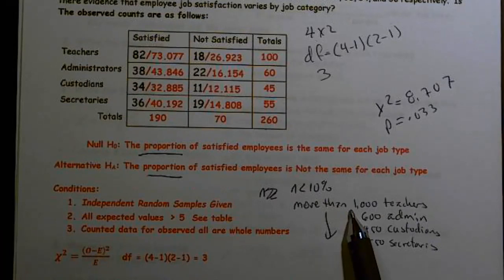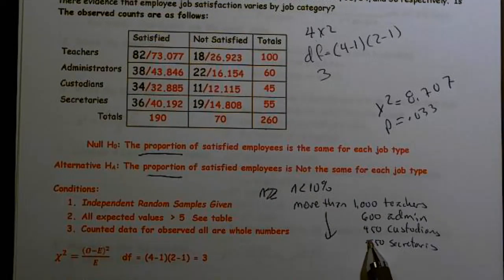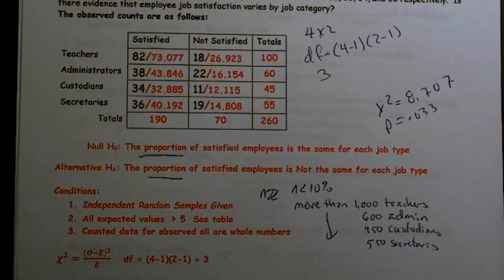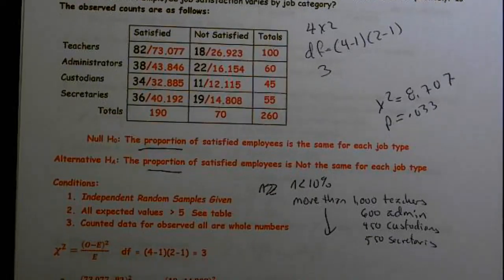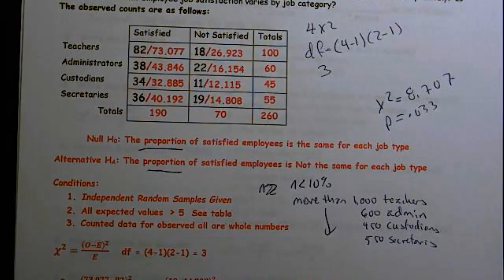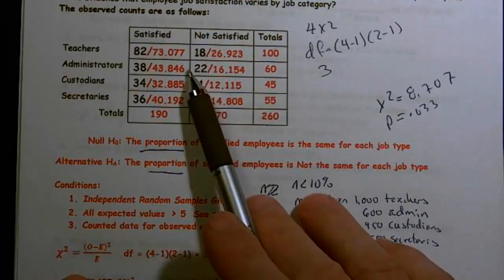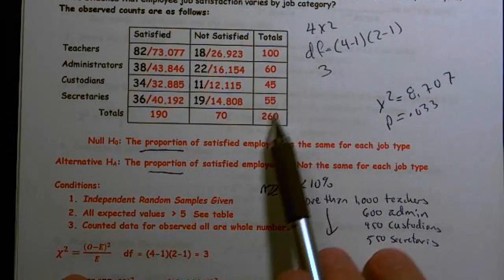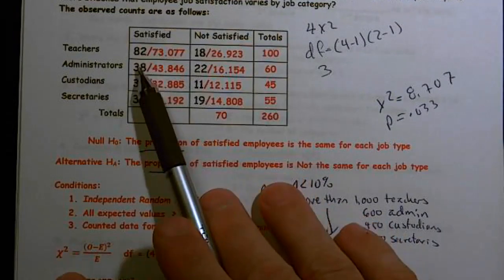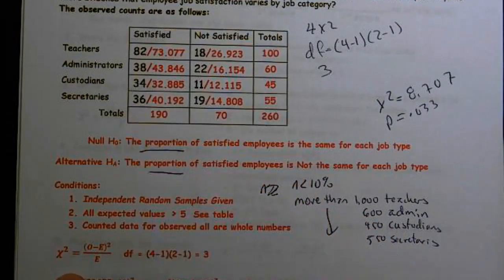N is less than 10%. Reasonable to assume that there are more than 1,000 teachers, more than 600 administrators, more than 450 custodians, and more than 550 secretaries. So there's our N is less than 10%. We just checked our expected values were all greater than five, and all of our observed data is counted data.